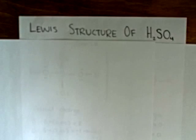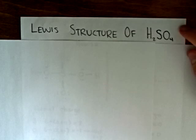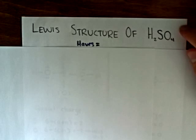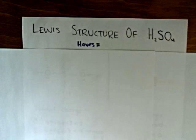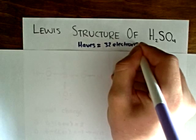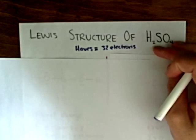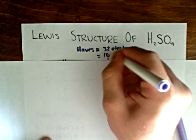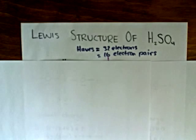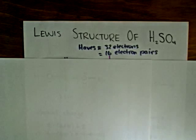So we start off by doing our Lewis expanded octet calculations. And these are quite easy to do. What we do is we determine the number of valence electrons that each atom in sulfuric acid has in its ground state. And I call these the haves. And if we do this, we'll come up with a number of 32 electrons, or 16 electron pairs. It doesn't matter how you write it.